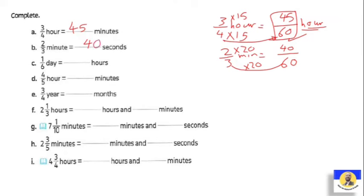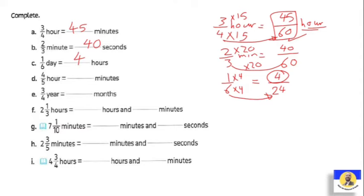One sixth of a day equals how many hours? A day has 24 hours, so I want to convert one sixth into a fraction with denominator 24. To get from 6 to 24, multiply by 4. So 1 × 4 = 4. Therefore one sixth of a day equals 4 hours. Notice I'm always changing the denominator to match the unit I want — a day has 24 hours, a minute has 60 seconds, an hour has 60 minutes, and so on.